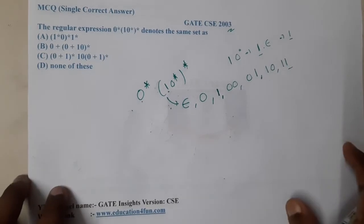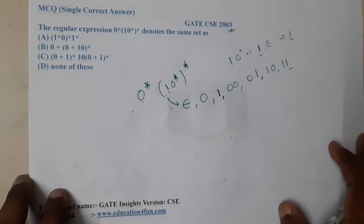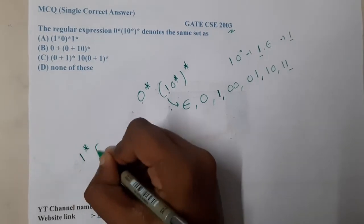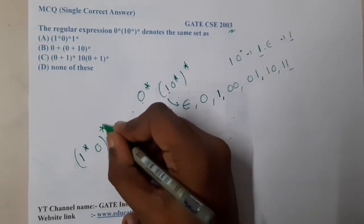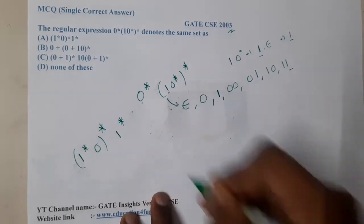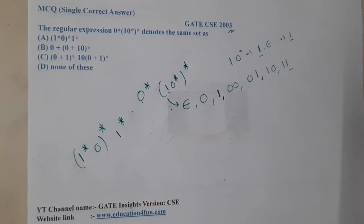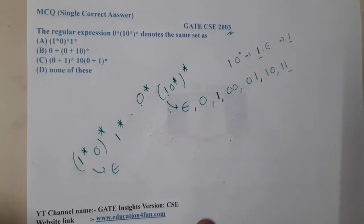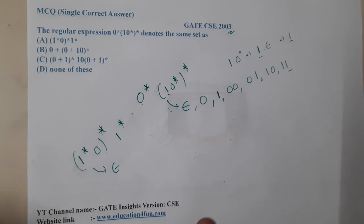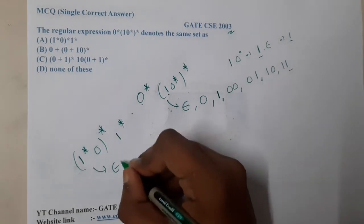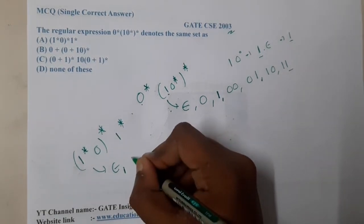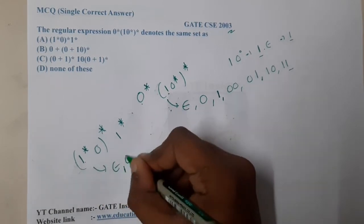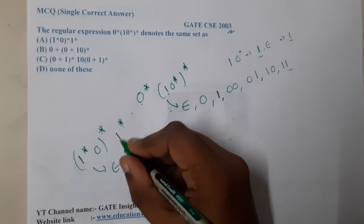Option A says it is (1*0)*1*. Can I generate a single epsilon here? Yes. Can I generate zero? Here I take zero — yes, I can generate zero. Can I generate one? Yes, because we have 1* and we can generate as many ones as we want.